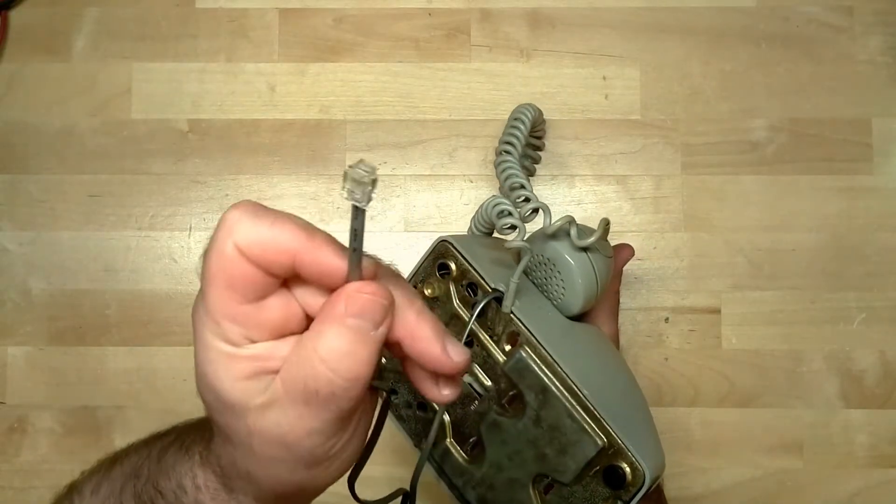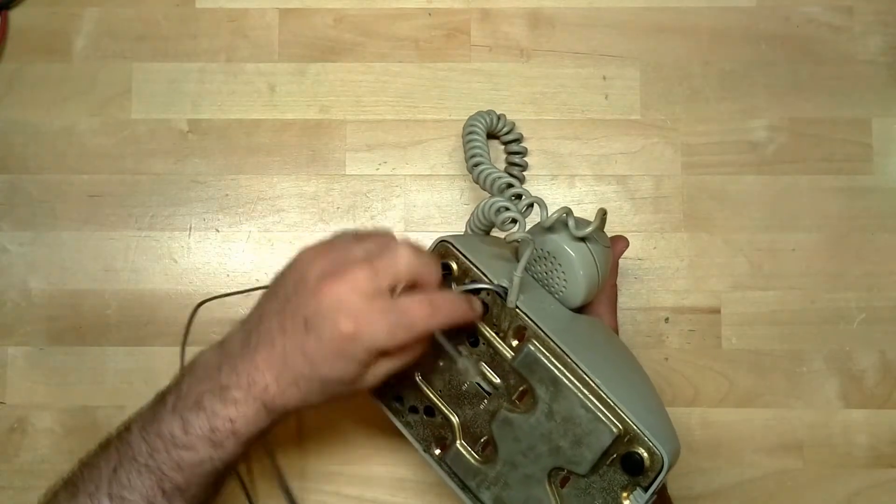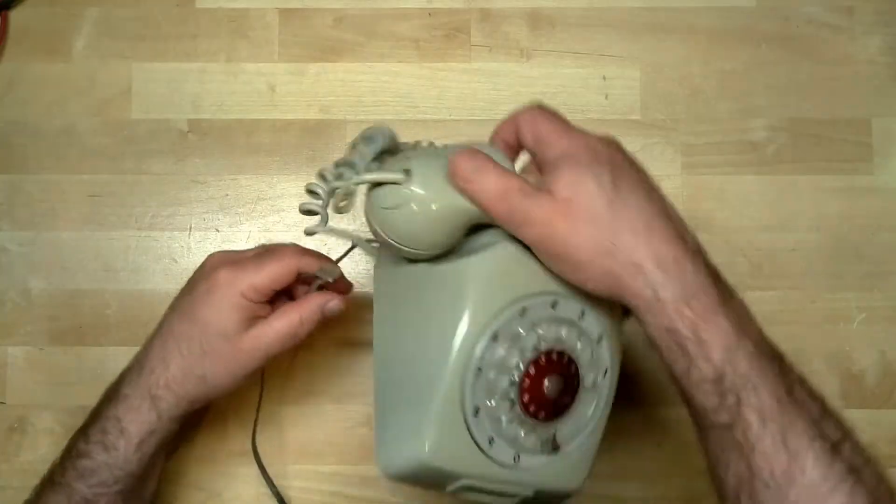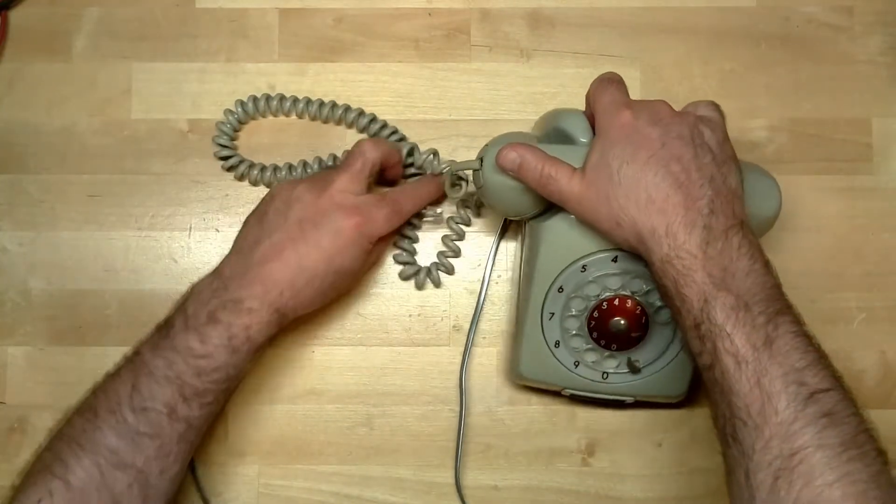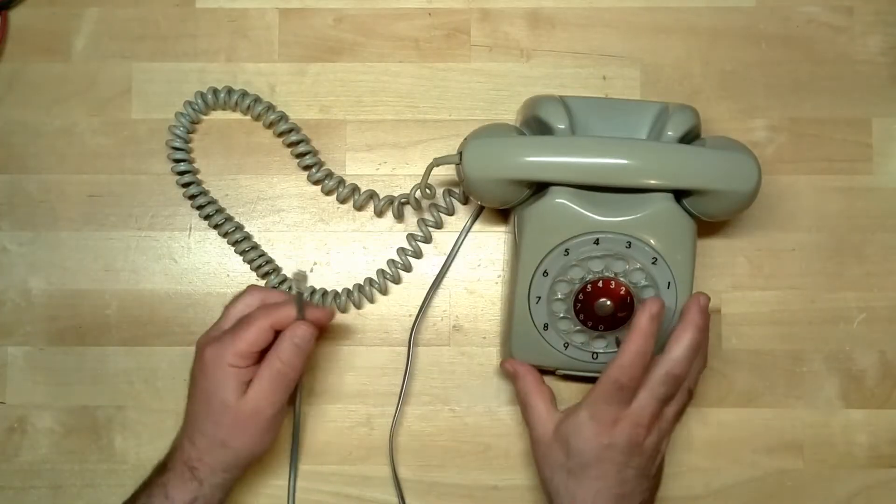On a modern system, you need one of these RJ11-style connectors. This phone would have originally come with a regular old wire with hard wires in it, meant to be connected on screw terminals in the wall or something like that. So I took that wire off, and I put this one on.